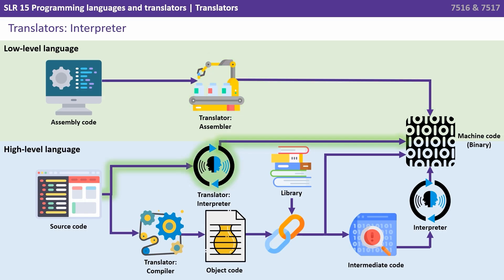When it comes to high level languages it gets a bit more complicated and we have a couple of paths we can take. The top line being highlighted here shows source code being translated by an interpreter into machine code. Interpreters take one line of code, translate it and then execute it.